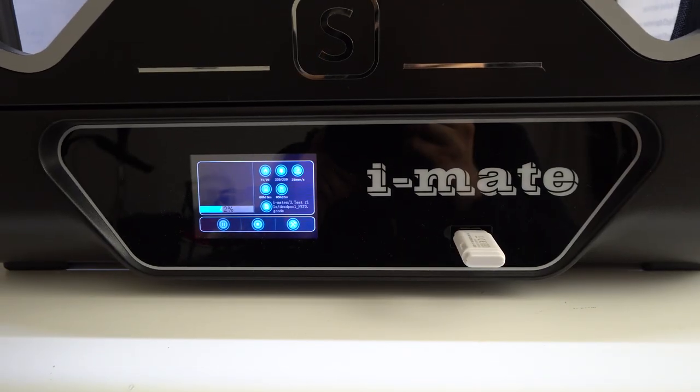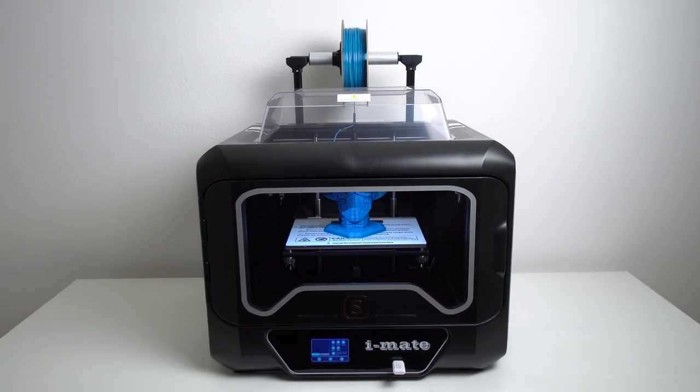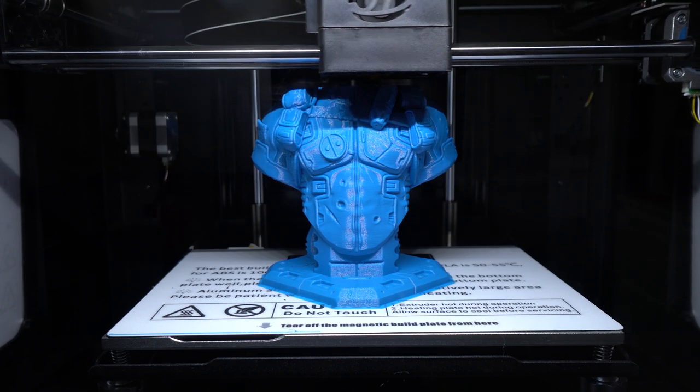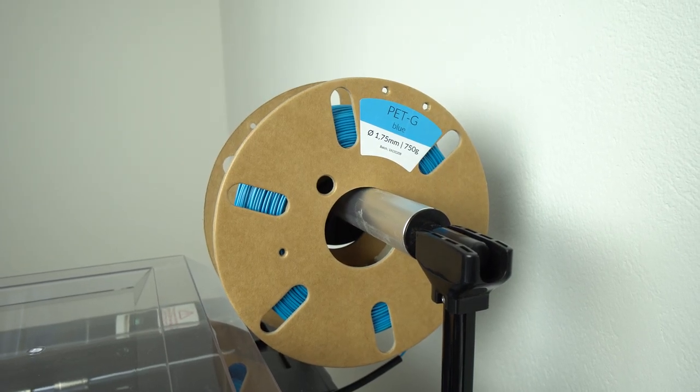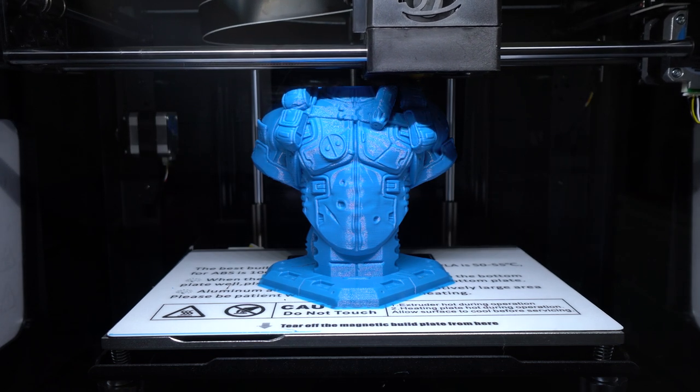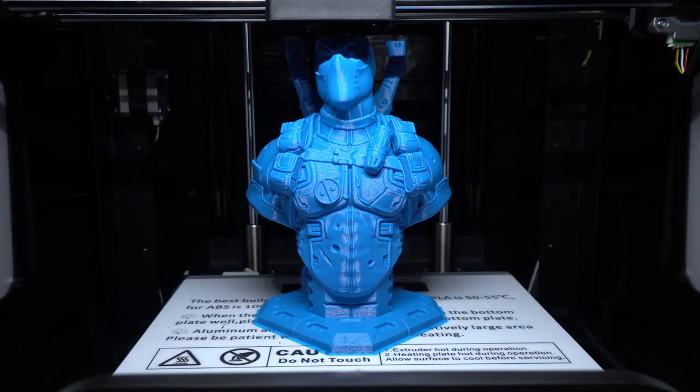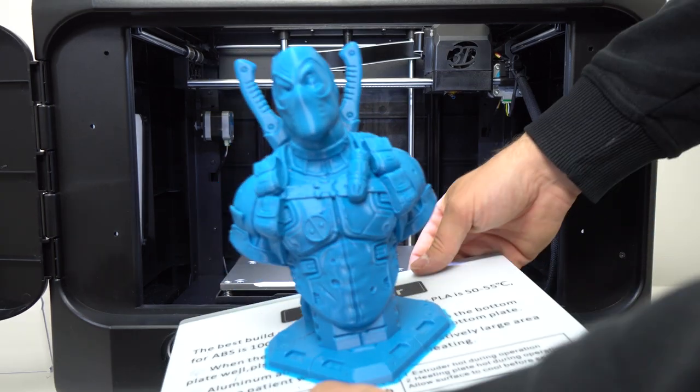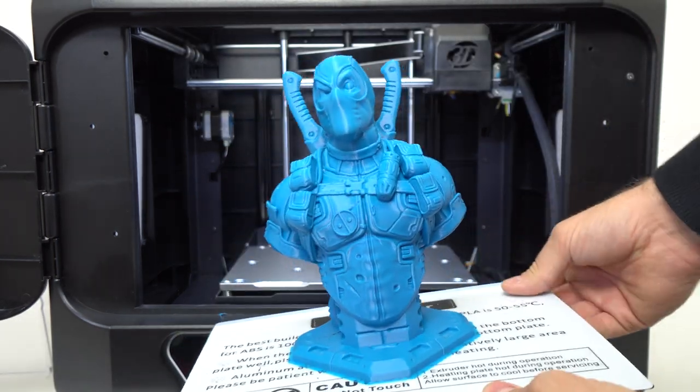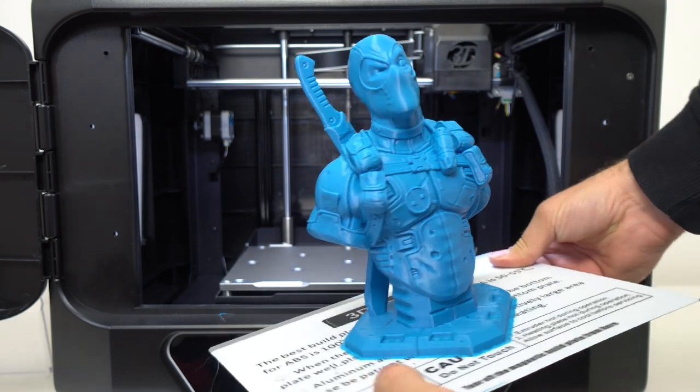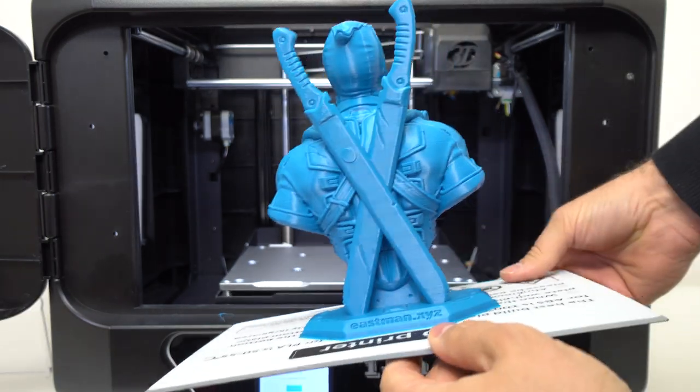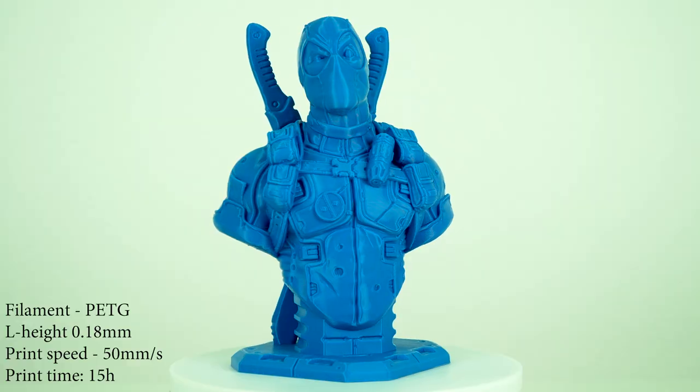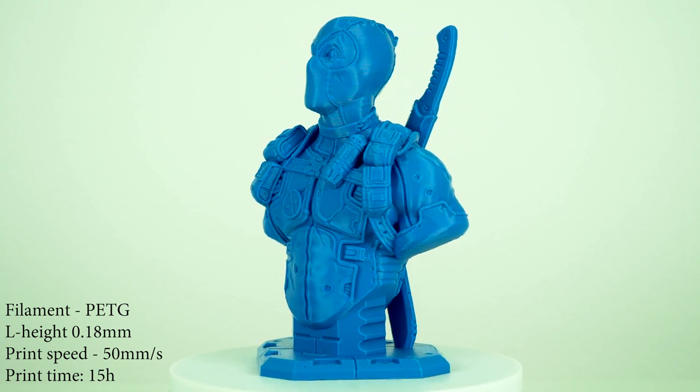Now for my next print of the PETG, I sliced this awesome bust of Deadpool and I started to print. This model is a bit challenged to print with PETG because of the two swords on the back of the model. So the printer needs to retract filament many times which can lead to stringing and PETG loves to string. So I am very curious how it will turn out in the end. Alright, the printing is now complete and the results were great. The print turned out awesome with all of the details and the back of the model was printed perfect as well. Here is a close look. Nice.